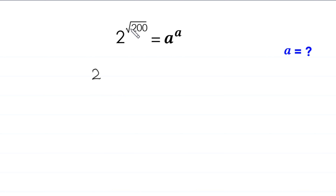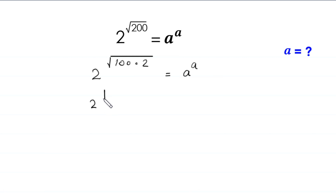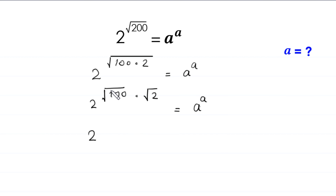2 to the power — this root 200 can be written as root 100 times 2, which is equal to a to the power a. Next, 2 to the power root 100 times root 2 is equal to a to the power a. Next, 2 to the power — root 100 will become 10 — so 2 to the power 10 times root 2 is equal to a to the power a.